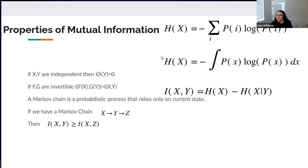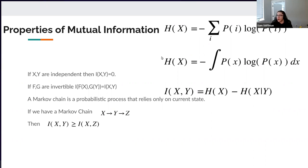There are a couple more important properties of mutual information. If two systems are independent, they don't have any information about each other — that intuitively makes sense. If you have invertible functions, mutual information is invariant under those transformations. Invertible functions don't create or destroy information. This means mutual information is independent of how you order your training data, since reordering is an invertible transformation — you can always recover the original ordering.